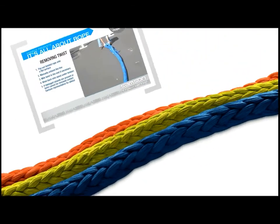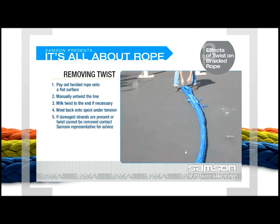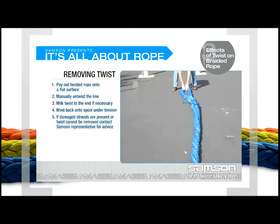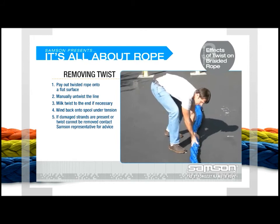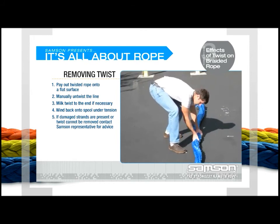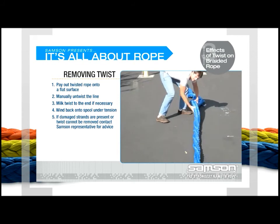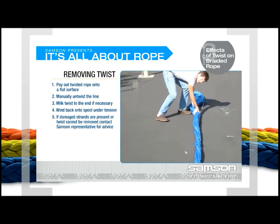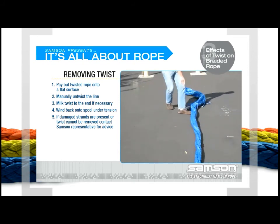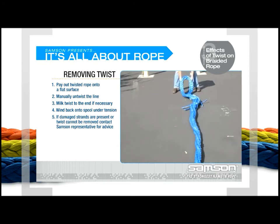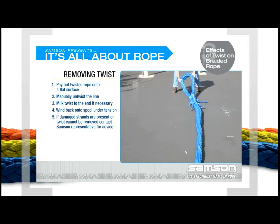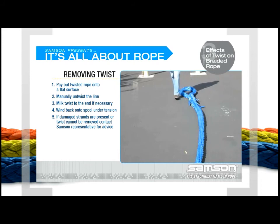If a twisted line has been identified, take the following steps to remove the twist. Pay out as much of the twisted section of rope as possible onto a flat surface. Manually untwist the line by flipping the eye repeatedly in the opposite direction of the twist until the twist is removed. It may be necessary to milk the twist to the end of the line for the best results. Wind the line back onto the winch or spool under reasonable tension, taking care to prevent re-twisting. If the strands appear damaged or the twist is impossible to remove, contact a Samson representative for advice.